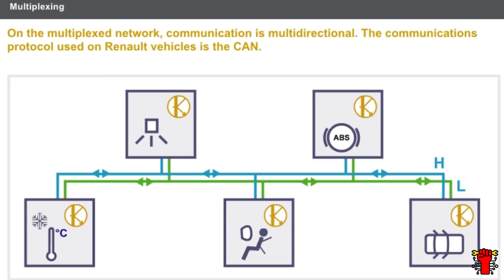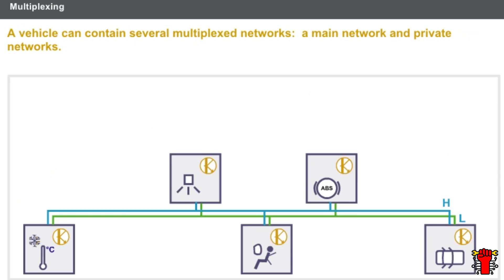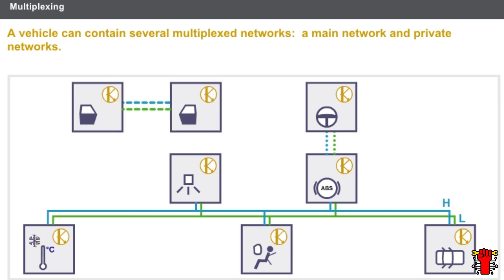On the multiplex network, communication is multidirectional. The communications protocol used on Renault vehicles is the CAN. All the computers are transmitters and receivers. The information exchanged is sent periodically or when an event occurs. A vehicle can contain several multiplexed networks: a main network, to which most of the vehicle's computers are connected, and so-called private networks, which concern only certain computers.